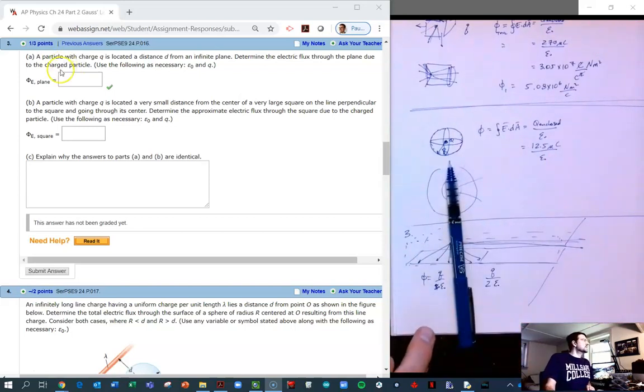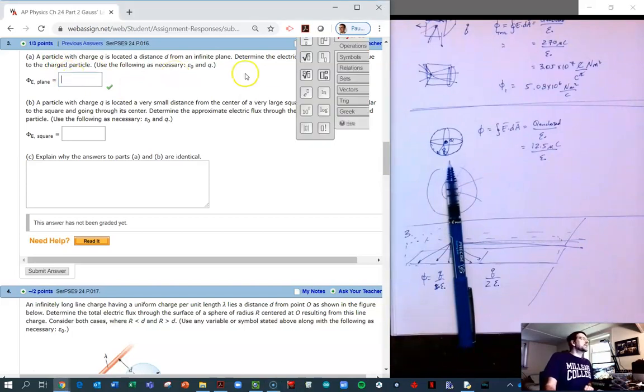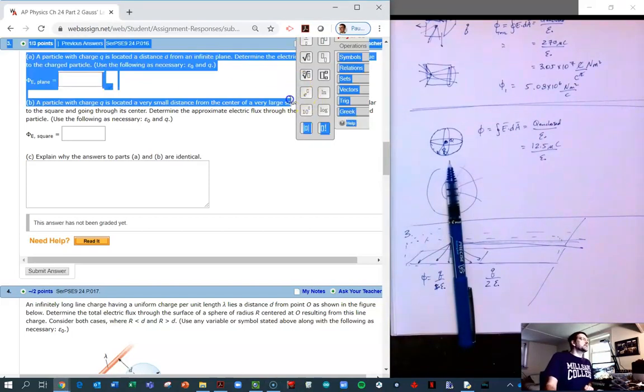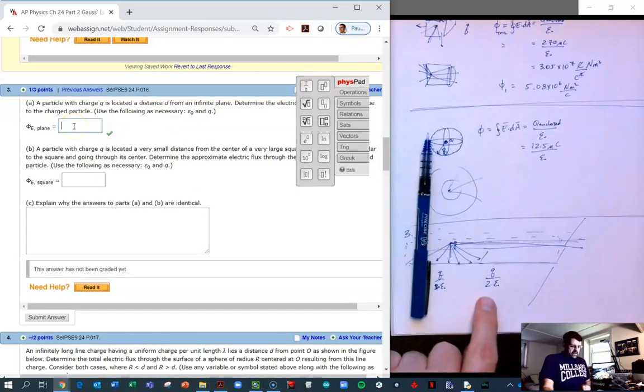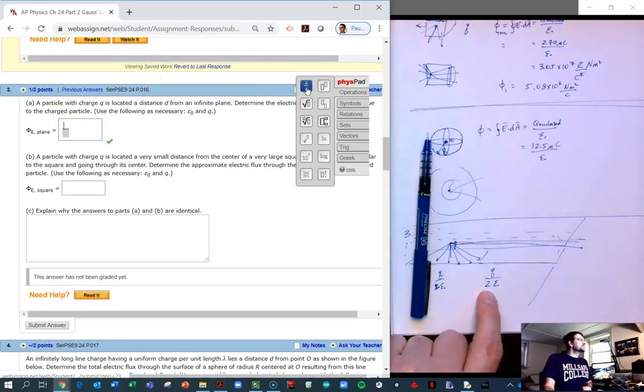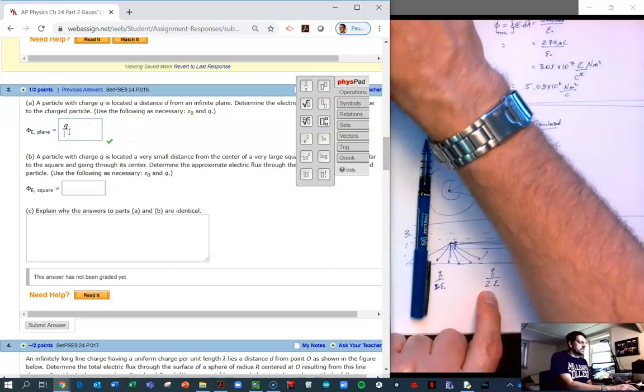This is a non-numeric solution, so we need to type this in. This is our answer. We're going to need a fraction, and the top is Q, and then 2 over, and then here's the hard part, epsilon naught.